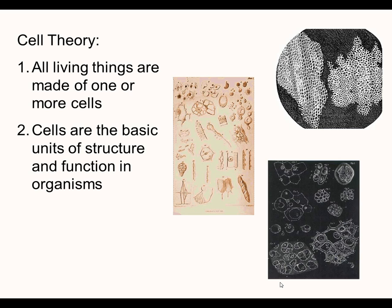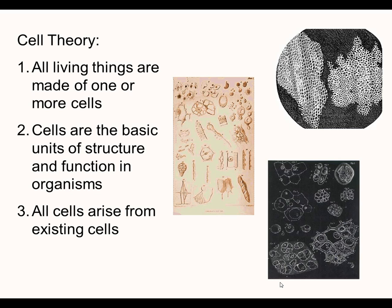The second part of the cell theory is that cells are the basic units of structure and function in organisms — these are the building blocks of all living organisms. The third part is that all cells arise from preexisting cells. This basically states that cells don't spontaneously show up. A living organism has to produce another cell in order for cells to exist — they have to go through the process of reproduction. We'll talk a little more about the importance of the cell theory on the next slide.